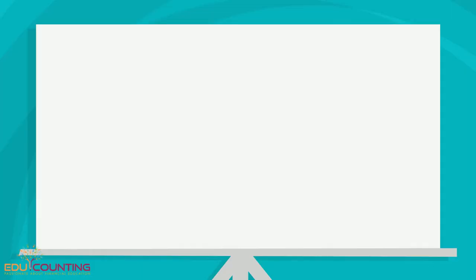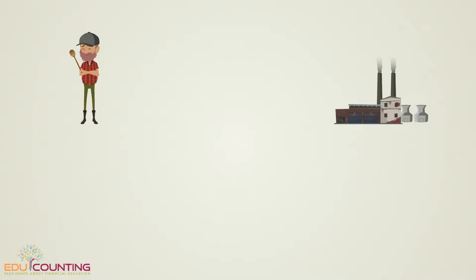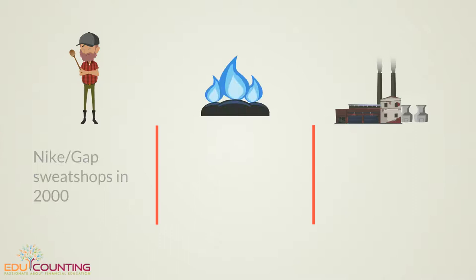Social issues can encompass health and safety, labor standards, human rights issues, community, customer responsibility, and also supply chain management. Investors may not want to own a part of an industry or a company that has a poor social impact on the world.